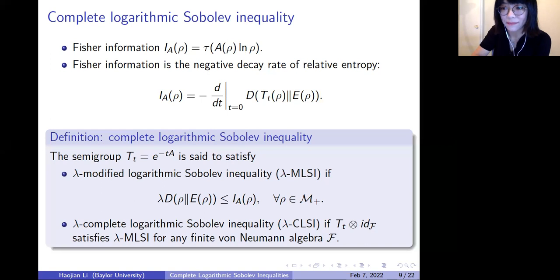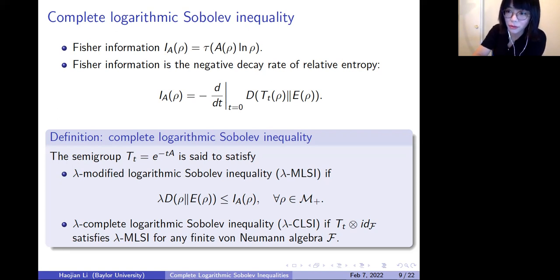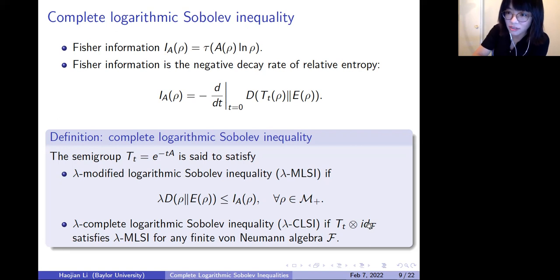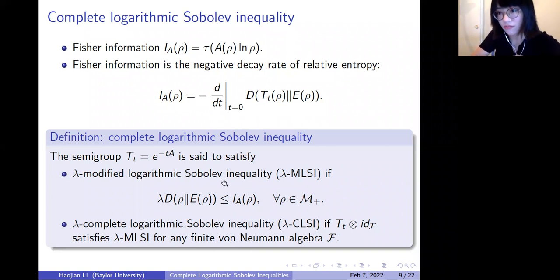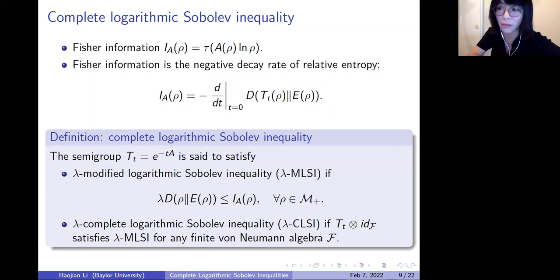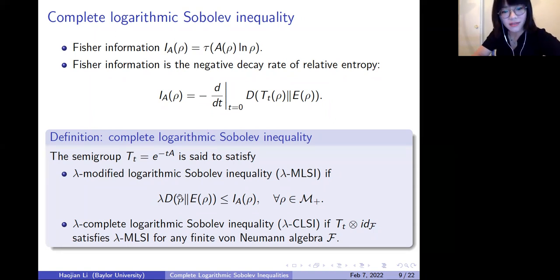We say a semigroup satisfies lambda-MLSI if lambda times the relative entropy is smaller than the Fisher information for arbitrary positive rho. And if we have this inequality for every T_t tensor with the identity over arbitrary finite von Neumann algebras, we say this semigroup satisfies CLSI. There are several questions to answer: first, is this well-defined? Since relative entropy is positive, we want to make sure Fisher information is also positive. The answer is yes, and I only know one proof using double operator integrals — if you know an elementary proof, please let me know.